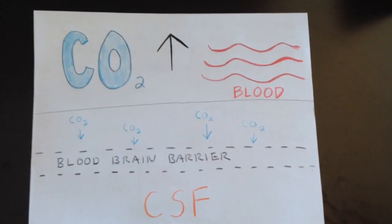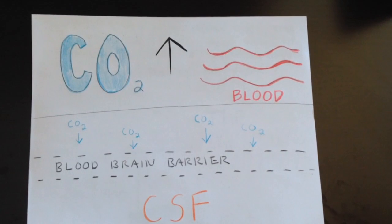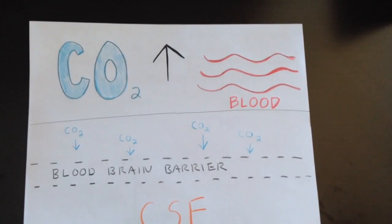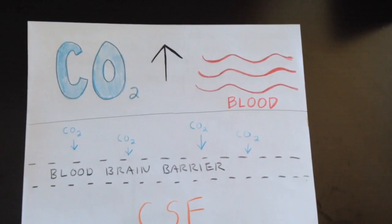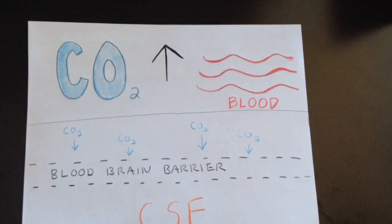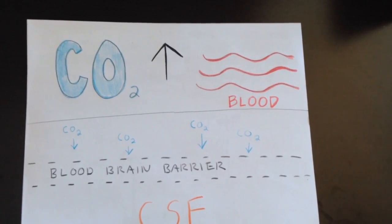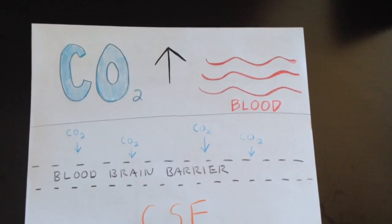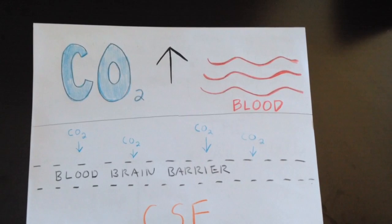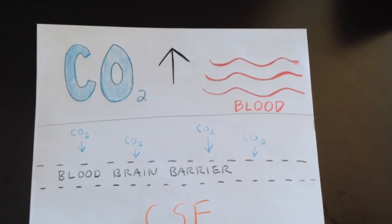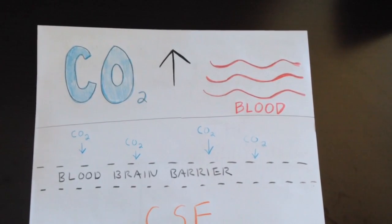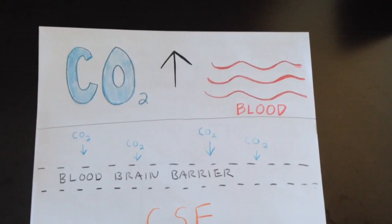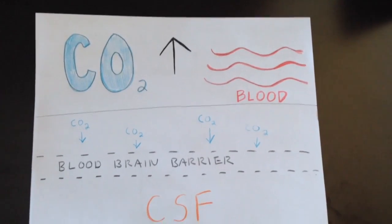When carbon dioxide levels rise in the blood, the blood-brain barrier allows for a quick exchange of carbon dioxide into the cerebral spinal fluid, which raises cerebral spinal fluid carbon dioxide levels, lowering the pH.